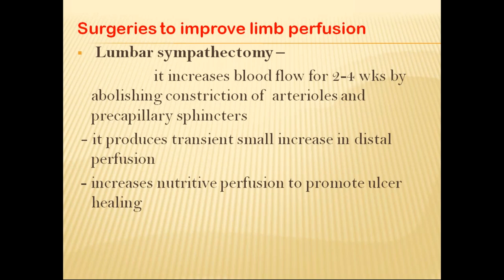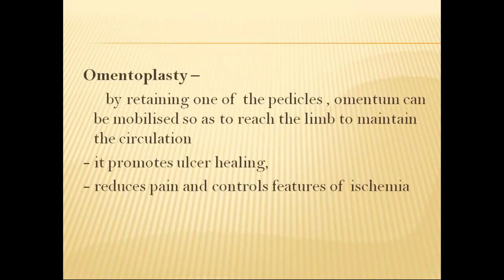To improve limb perfusion surgically: if there is vasoconstriction with no blood supply to the distal part, lumbar sympathectomy can be done to prevent vasoconstriction and cause dilation of arterioles. It increases blood flow for two to four weeks by abolishing constriction of arterioles and precapillary sphincters, provides a transient small increase in distal perfusion, and increases nutritive perfusion to promote ulcer healing. Omentoplasty — using the omentum's rich blood supply — can create collaterals for perfusion; the omentum is mobilized to reach the limb, promoting ulcer healing, reducing pain, and controlling features of ischemia.